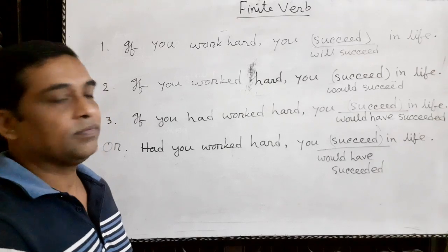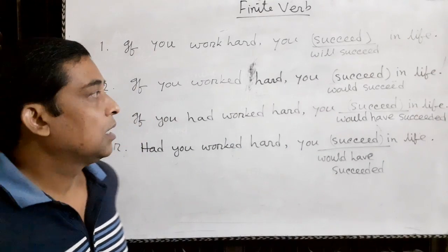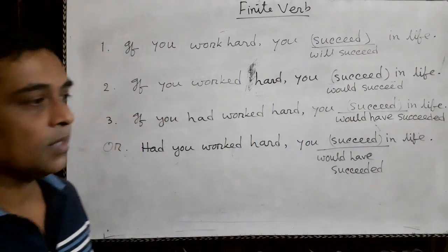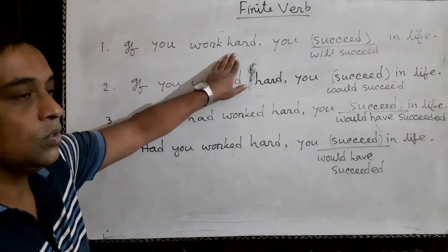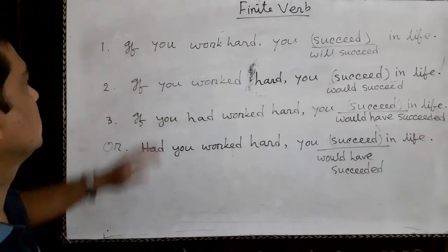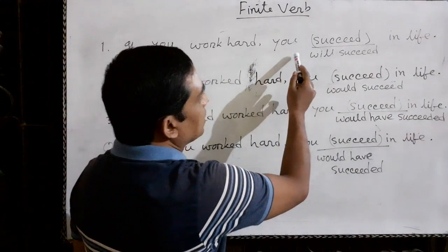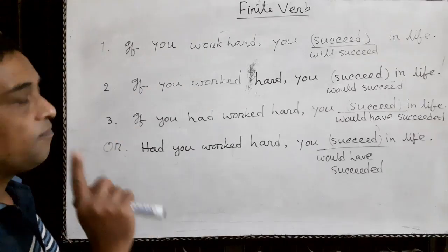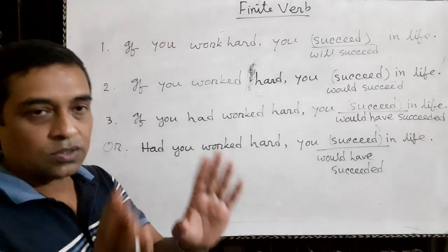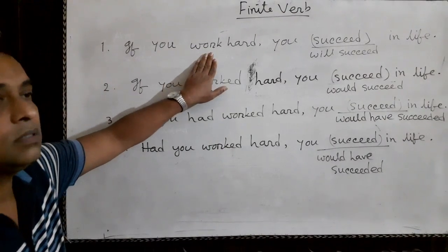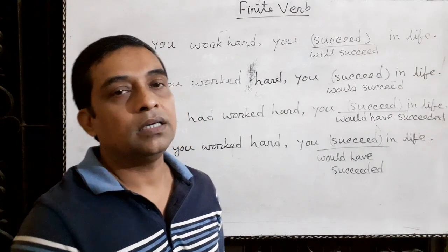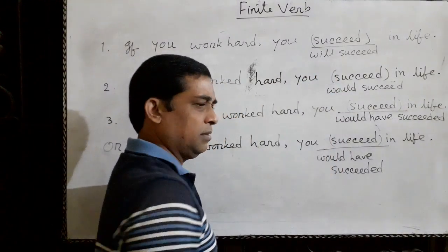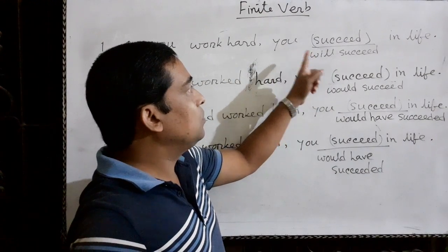Conditional sentences are complex sentences and they have two clauses: one is the subordinate clause and another is the main clause. You have to remember — if the subordinate clause (which is a subordinate adverbial clause) starts with 'if', for example: 'If you work hard, you succeed in life' — if the subordinate clause is in present tense, then the main clause will be in future indefinite tense. That means we should write 'shall' or 'will' after the subject.